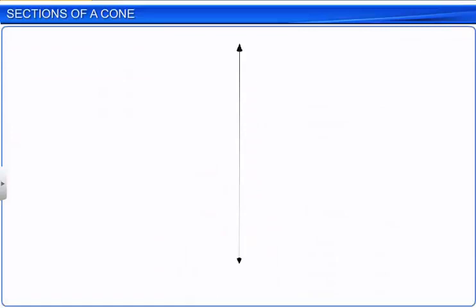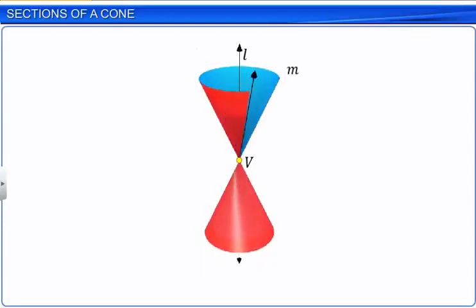Consider a fixed vertical line L. Now, consider another line M that intersects line L at a fixed point V. Let the angle at which line M is inclined to line L be alpha. If line M rotates about point V such that angle alpha remains constant, it generates a double cone as shown.